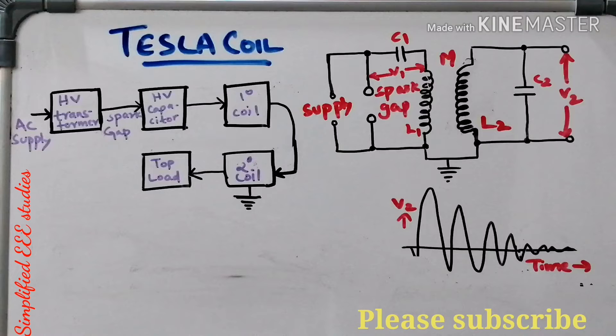Then you will be getting the high voltage output. And the wave shape will be in this manner. You will be getting damped waveforms. The shape of the waveform will be damped one. You can see that high magnitude peak you will be getting. Apart from that high frequency. High frequency with high voltage can be generated.